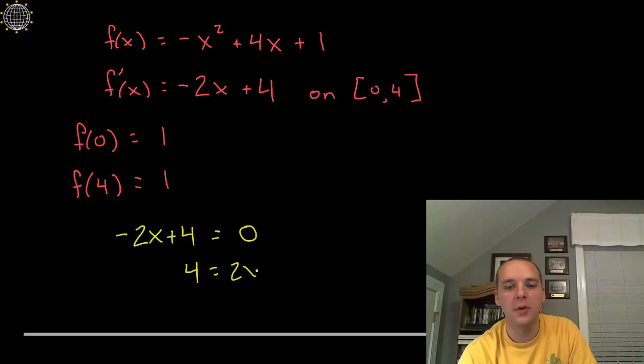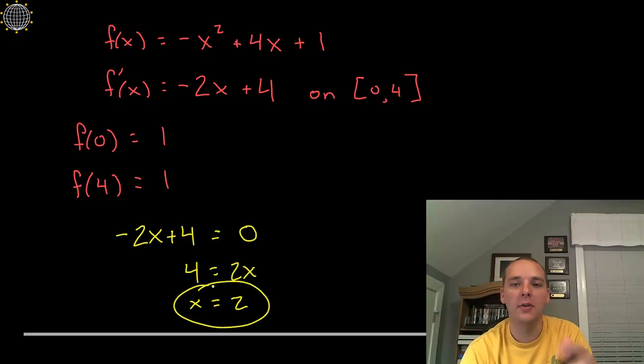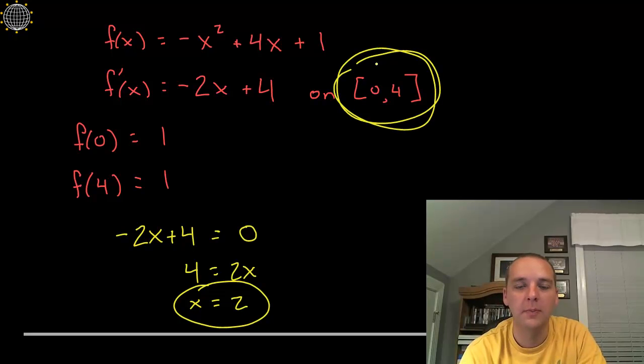4 equals 2x, and so x equals 2. That's our value for c, such that the derivative there equals zero, and sure enough it is on the interval from zero to 4.